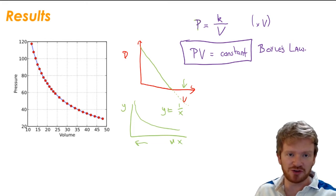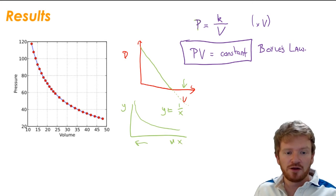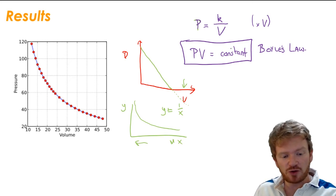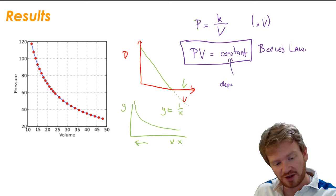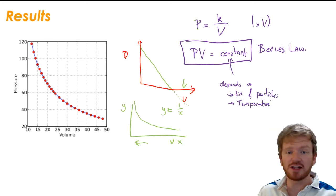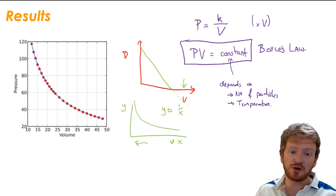If I rearrange that by multiplying both sides by V, I get pressure times volume is equal to a constant. This is called Boyle's law — the only law you need to know for IGCSE physics about gases, but it's a really important equation. This constant depends on the number of particles and on temperature. Interestingly, it doesn't actually depend on what the gas is, which is quite cool — we'll do a lot more on that at A-level.